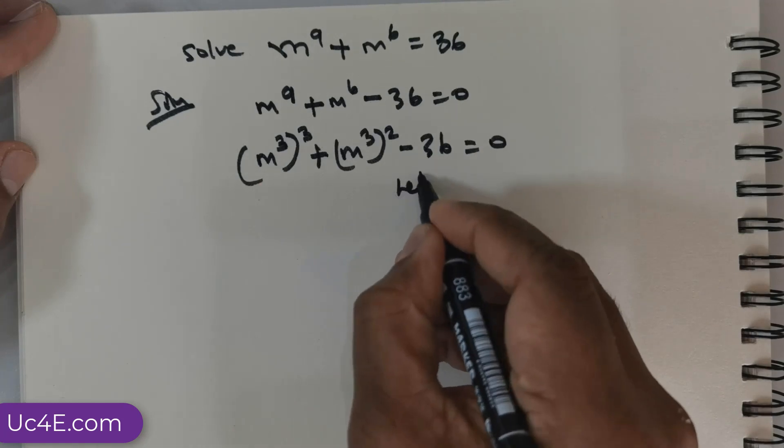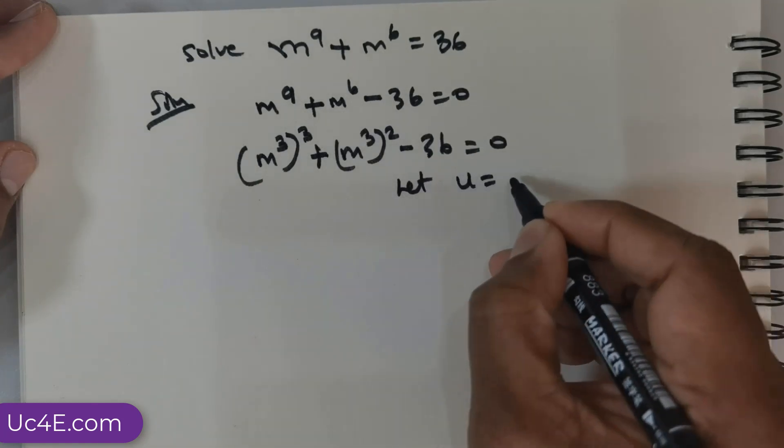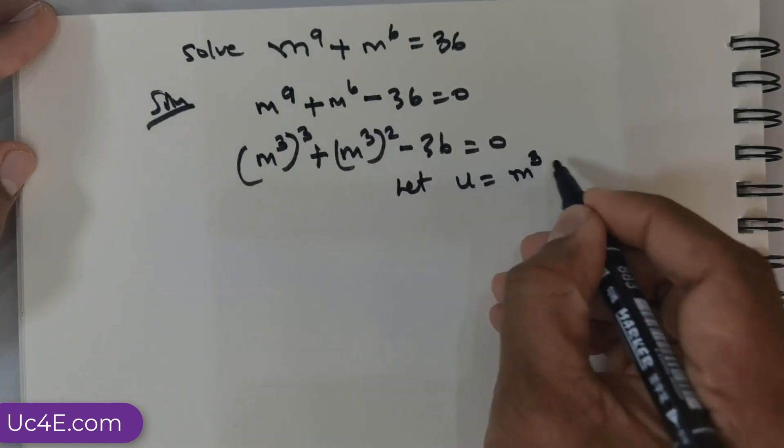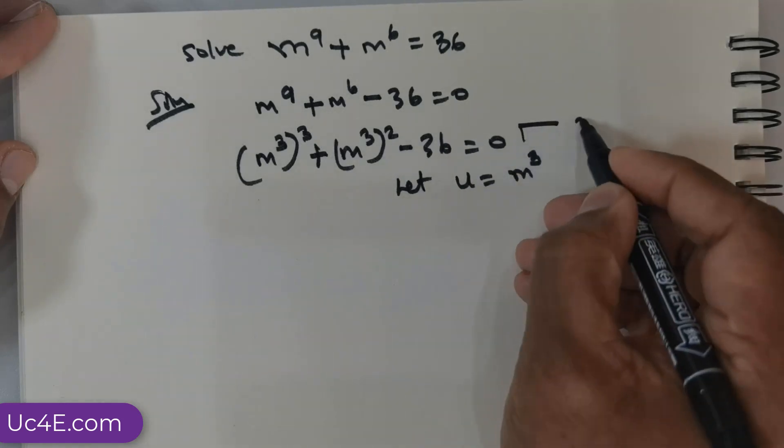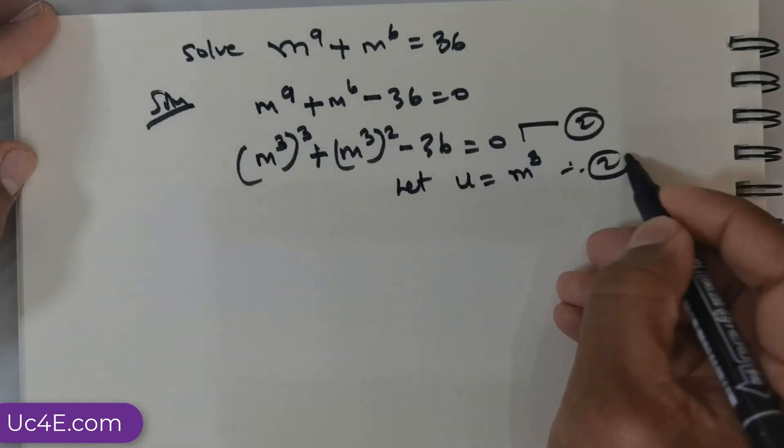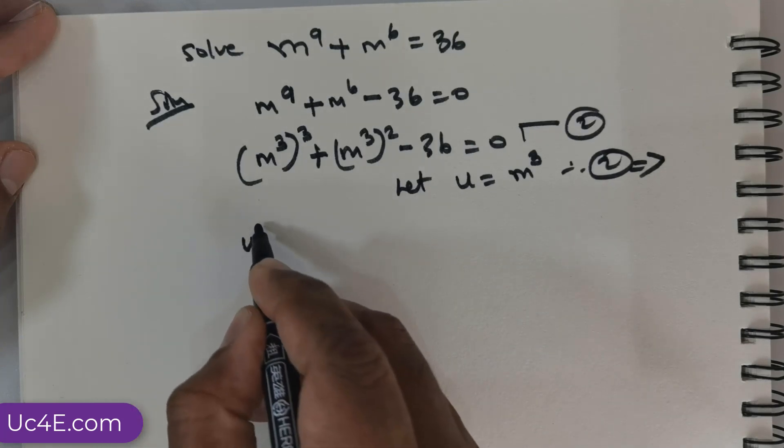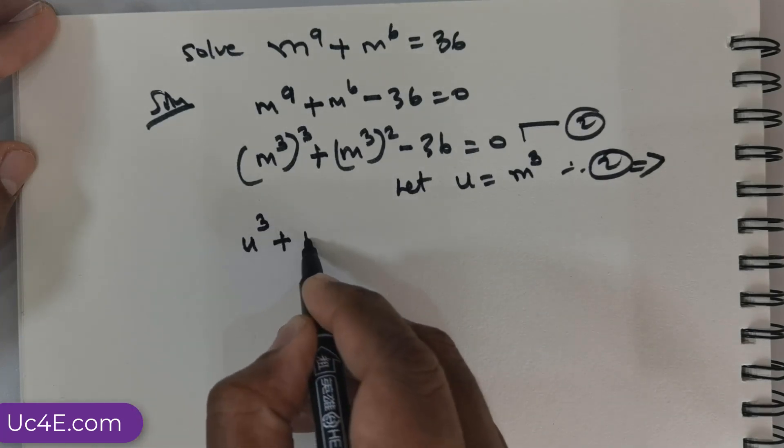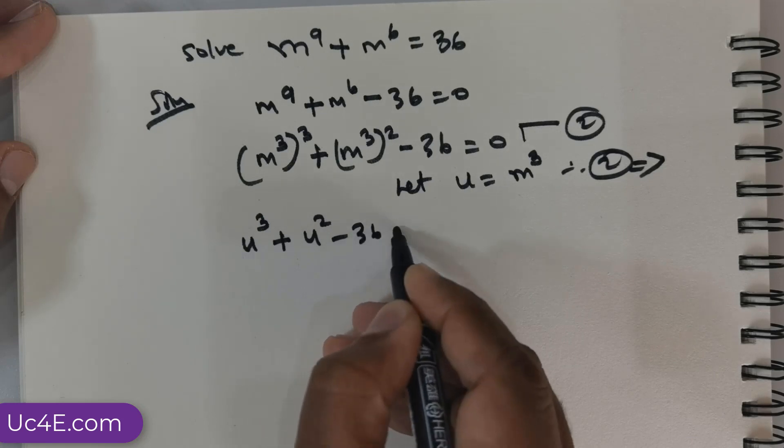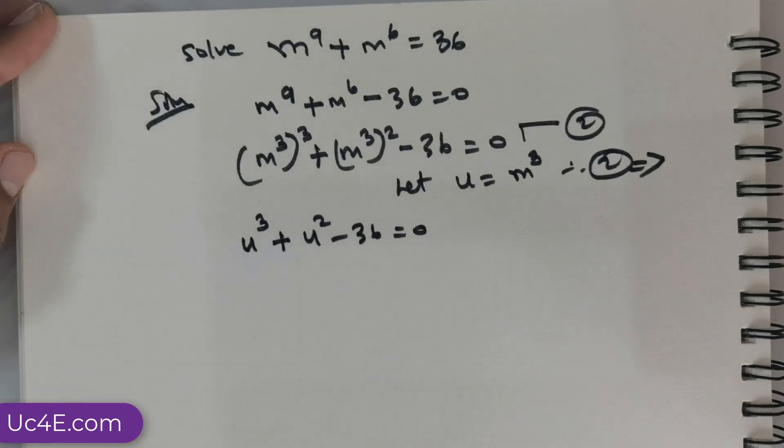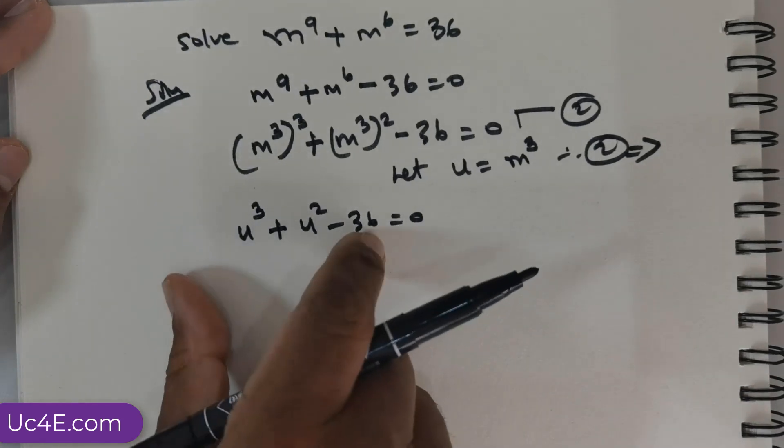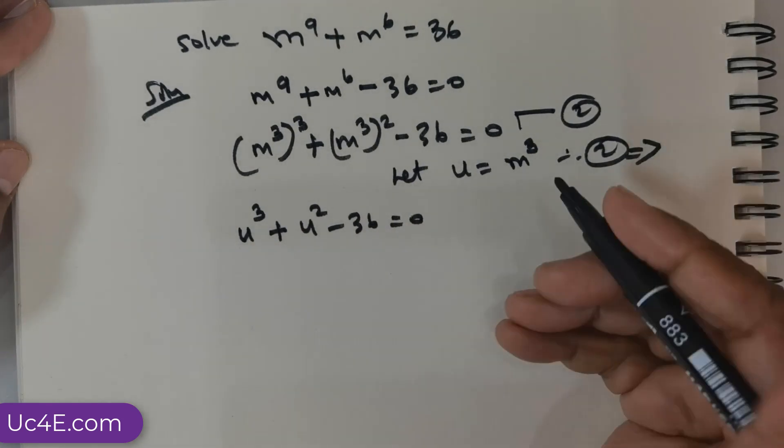So, now you can really see that I can use, let u equal m cubed. So, if I were to take this substitution, therefore, I can rewrite as u^3 + u^2 - 36 = 0. This is a cubic equation.